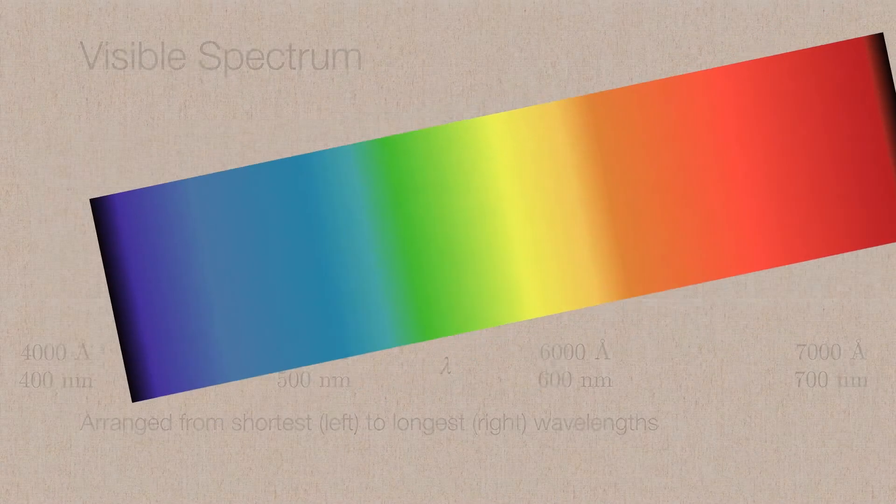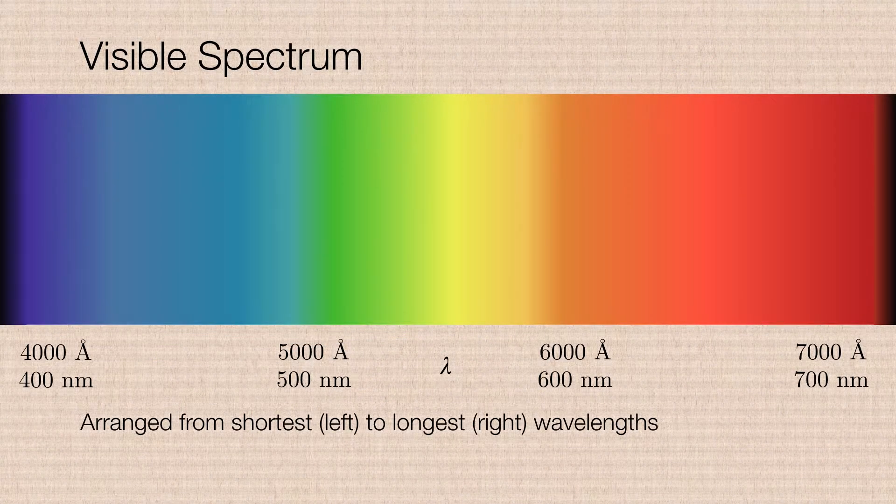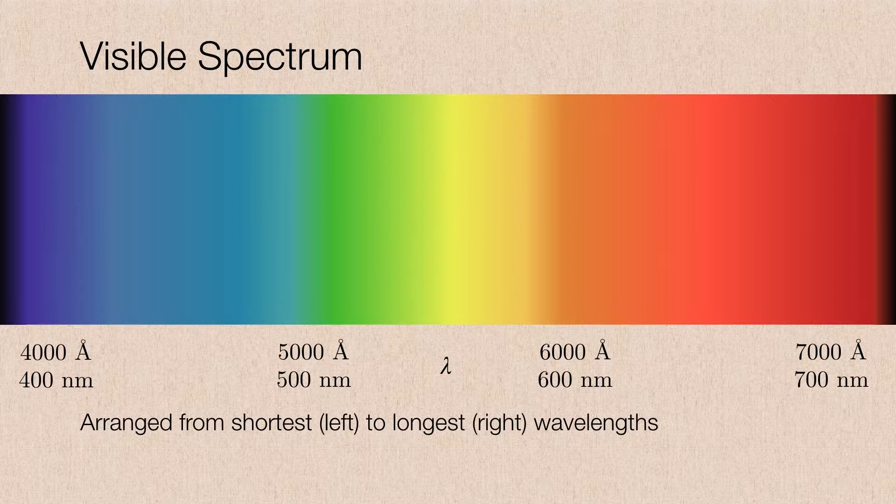So this phenomenon is known as dispersion, and when we pass the light through a prism we can disperse it into its component colors, thus giving us what we call the visible spectrum.